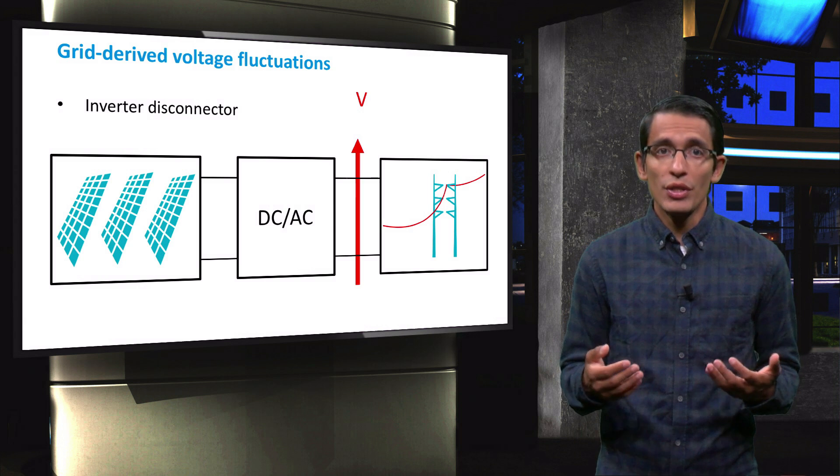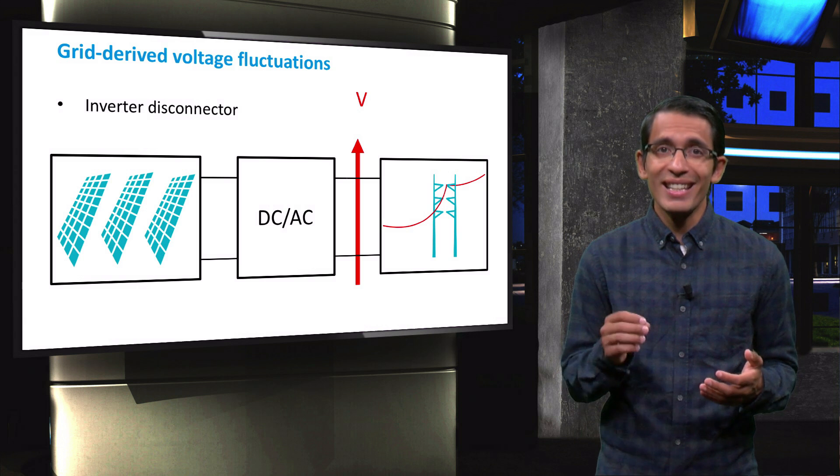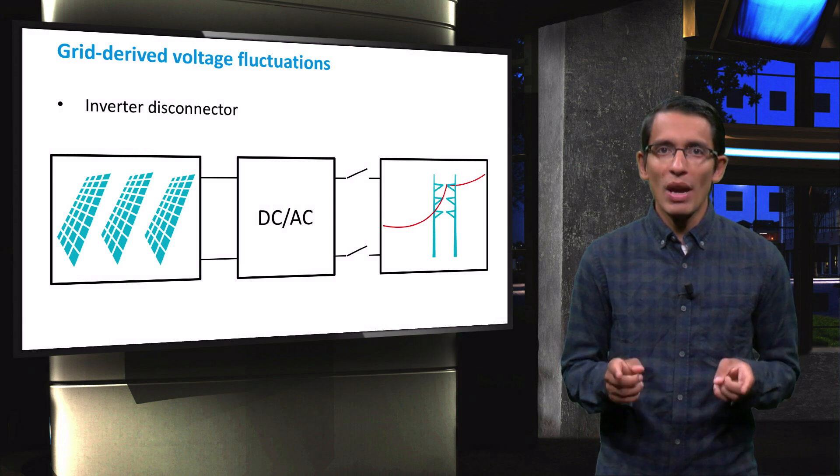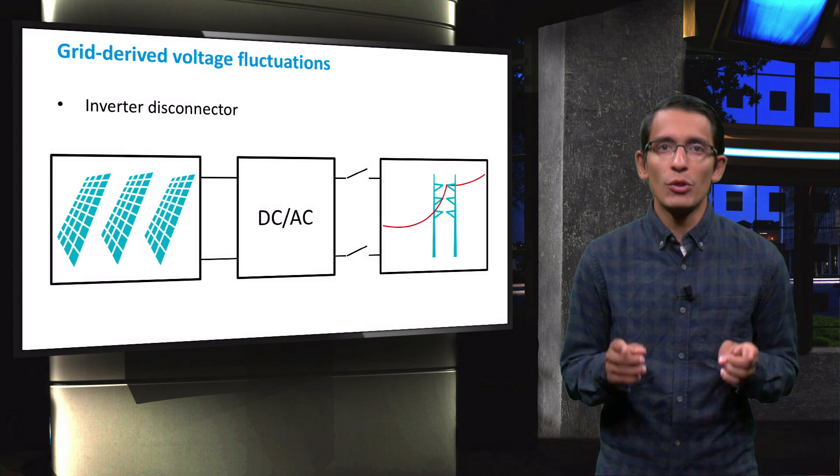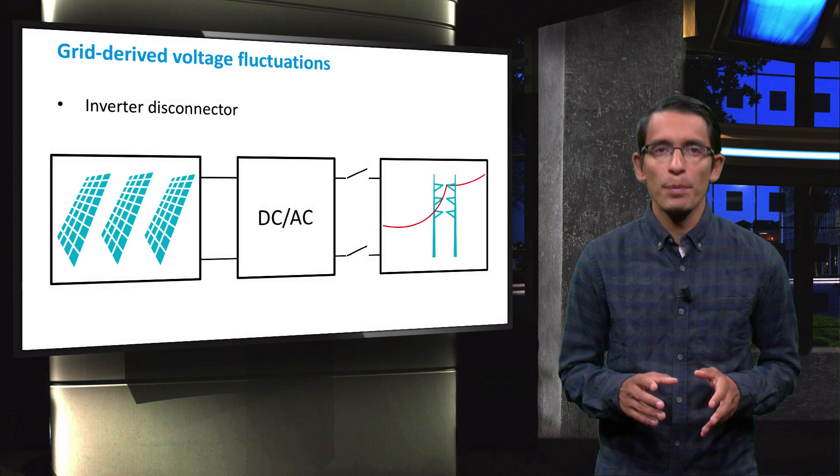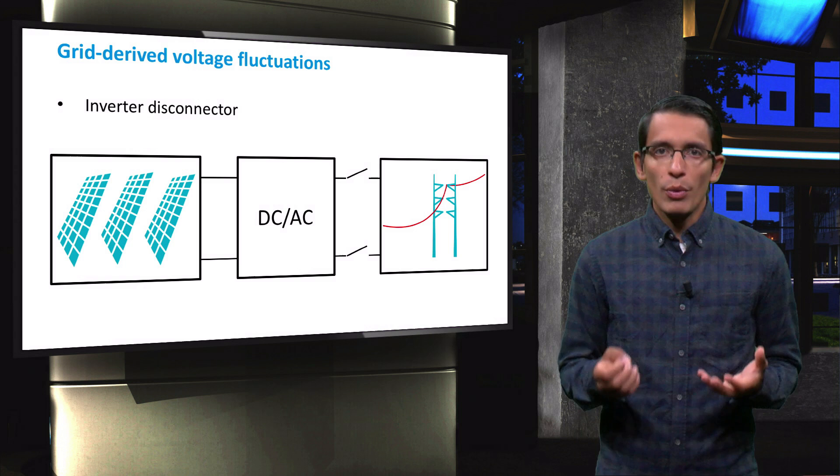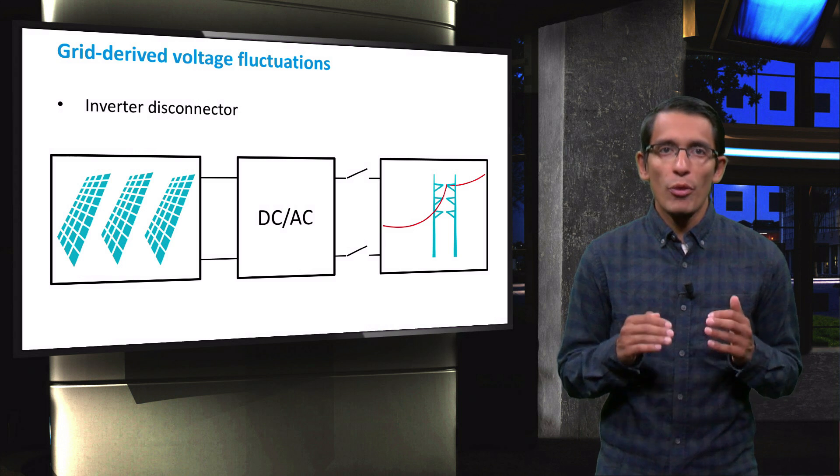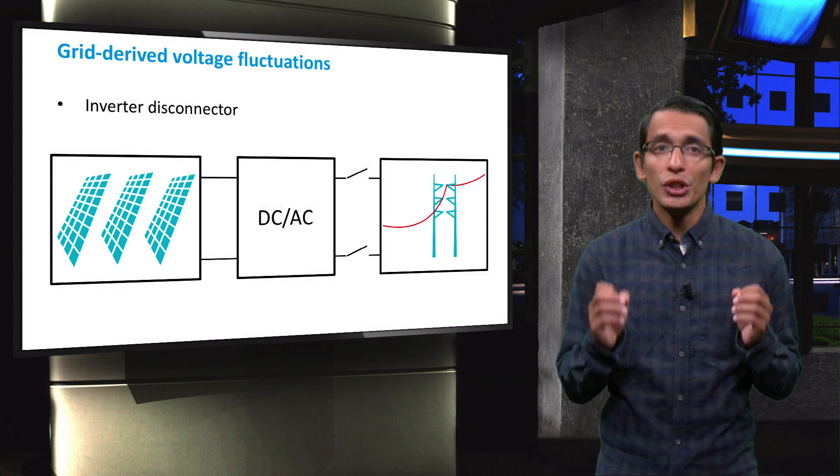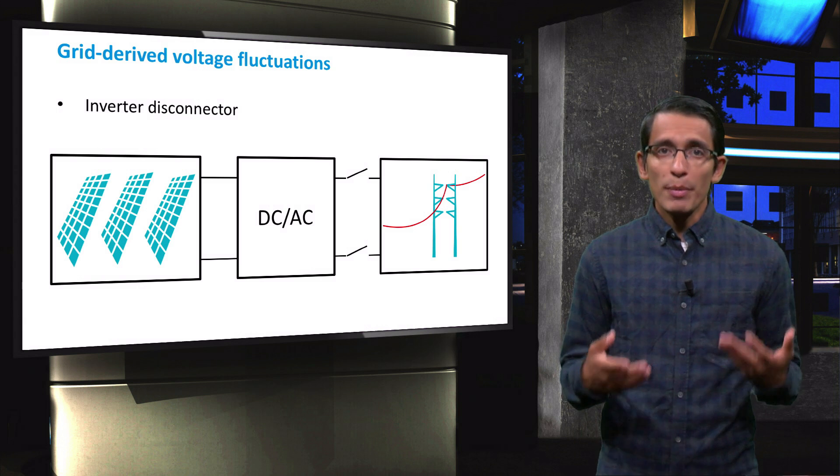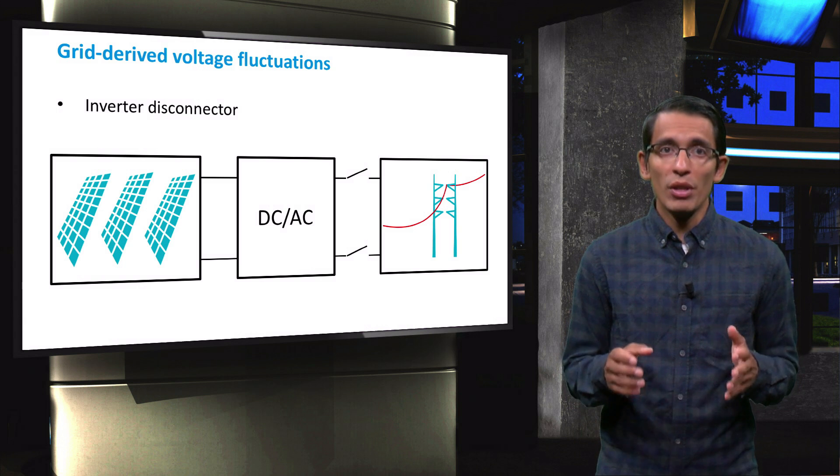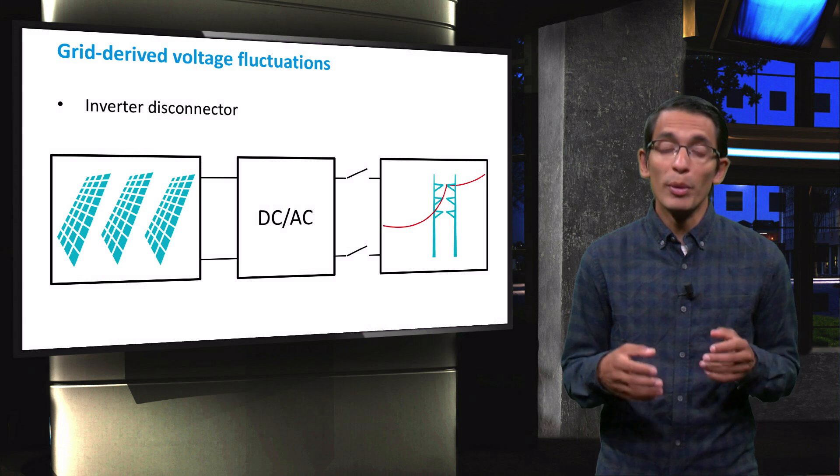In these situations, inverters normally feature a disconnecting system that is set to avoid the grid-derived voltage fluctuations that may be transmitted to the PV system. If the voltage of the grid is higher or lower than a preset threshold, the disconnector will shut off the PV system from the grid. This means that the PV power generated during this period of grid's instability will be wasted.